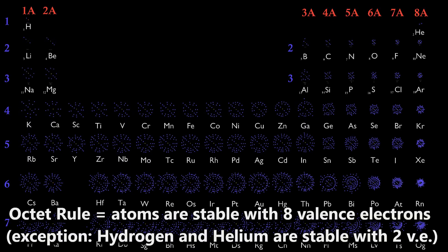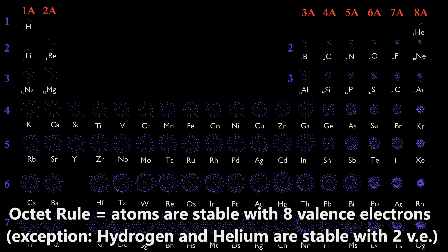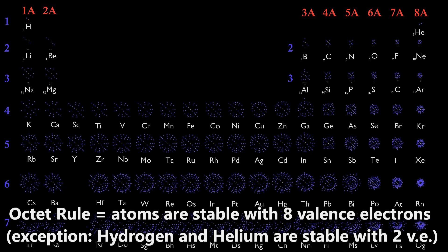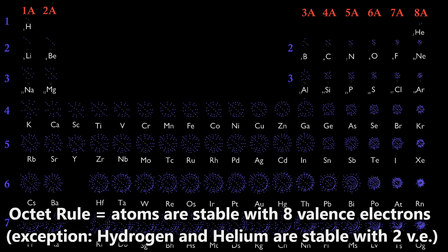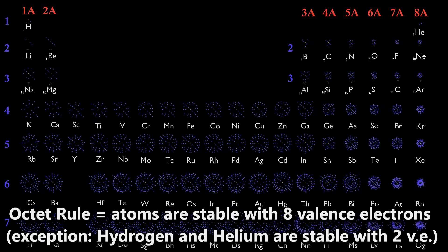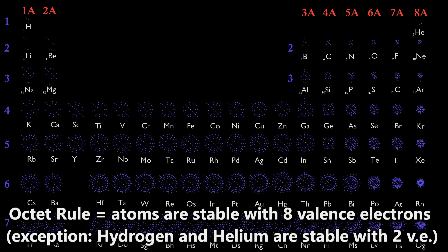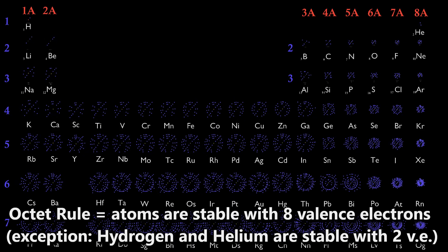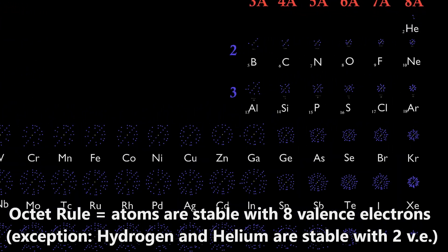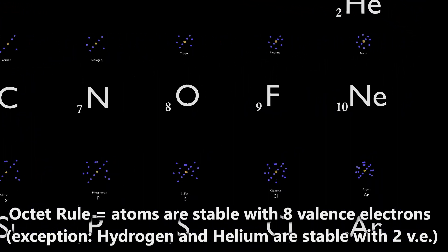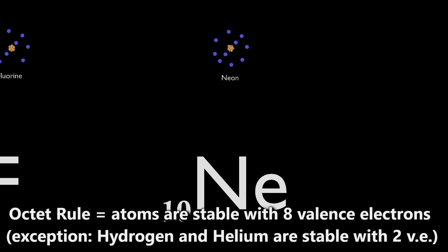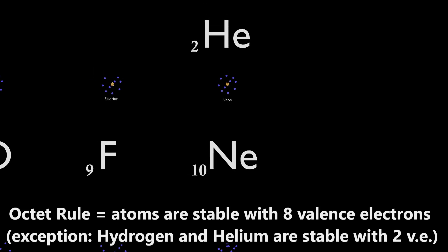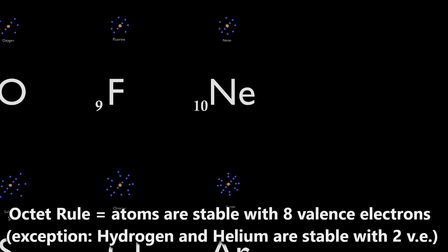The octet rule states that atoms are stable with eight valence electrons. We can determine the valence electrons of each atom using the periodic table. Looking at group 8, these are the noble gases, and they are chemically inert because they already have a full shell — eight electrons in their valence shell — so they already satisfy the octet rule.